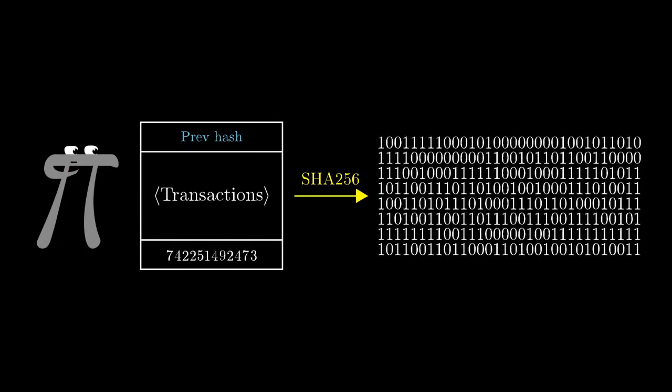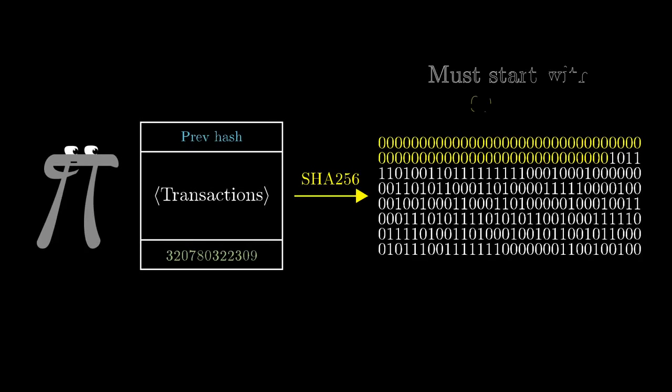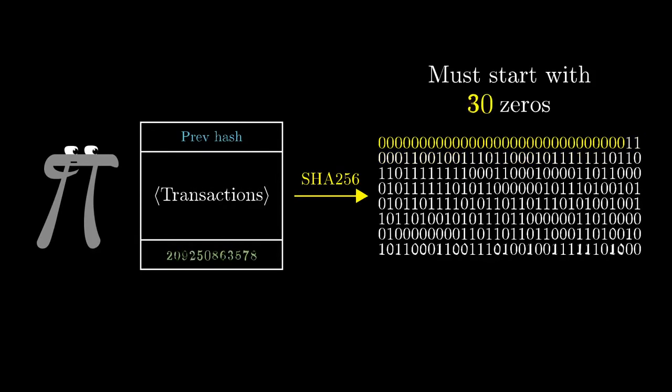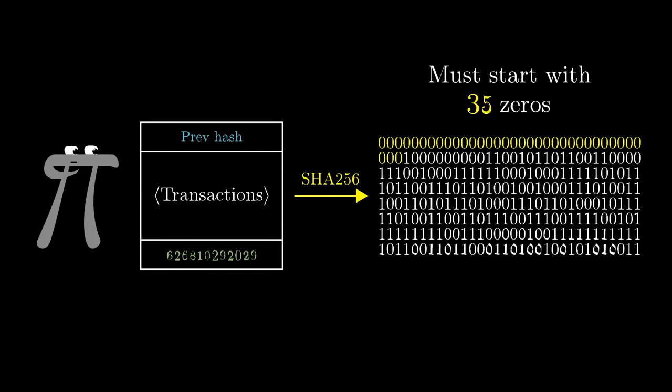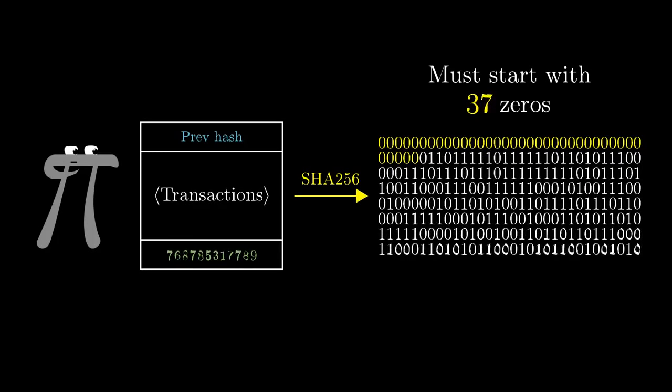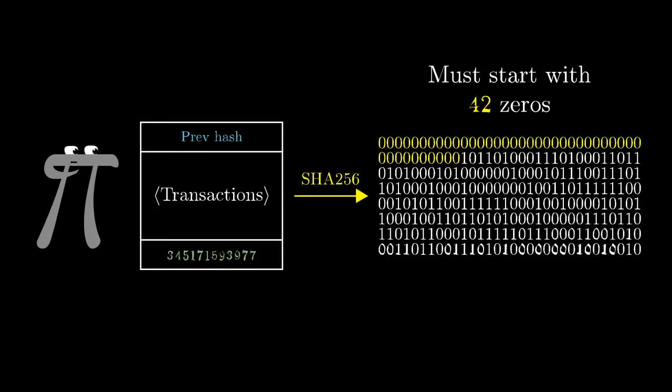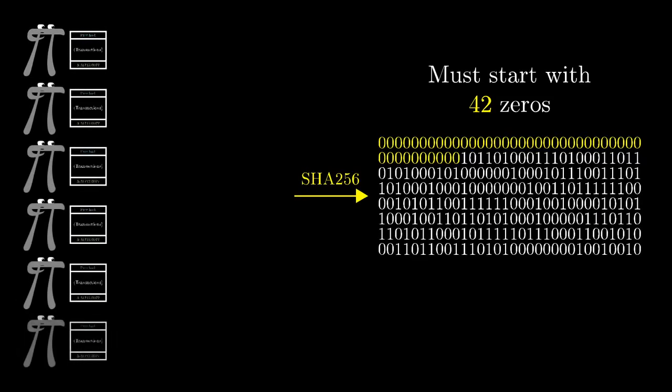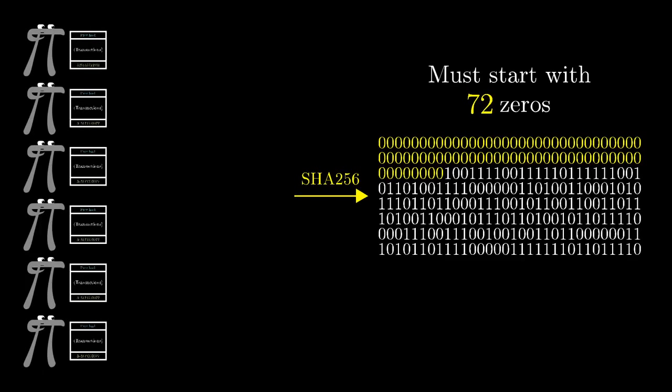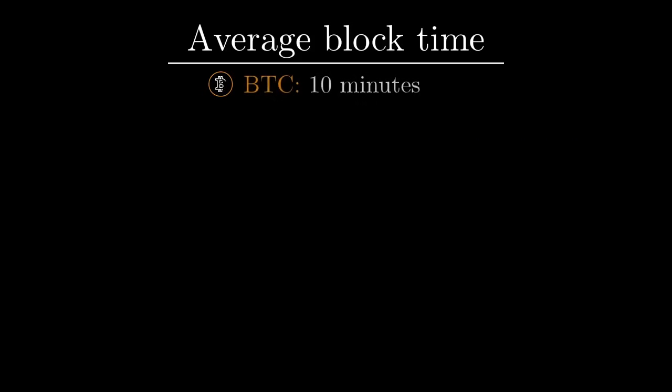Earlier, I said that the proof of work might be to find a special number so that the hash of the block starts with 60 zeros. Well, the way the actual Bitcoin protocol works is to periodically change that number of zeros so that it should take, on average, 10 minutes to find a new block. So, as there are more and more miners added to the network, the challenge actually gets harder and harder in such a way that this miniature lottery only has about one winner every 10 minutes.